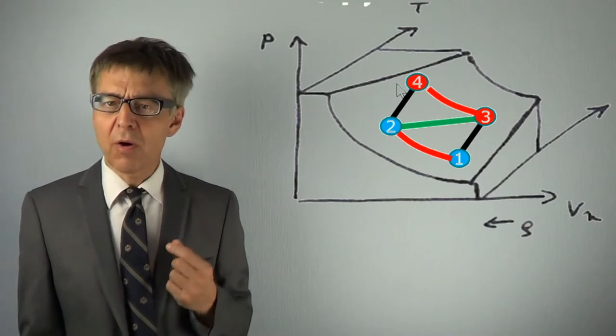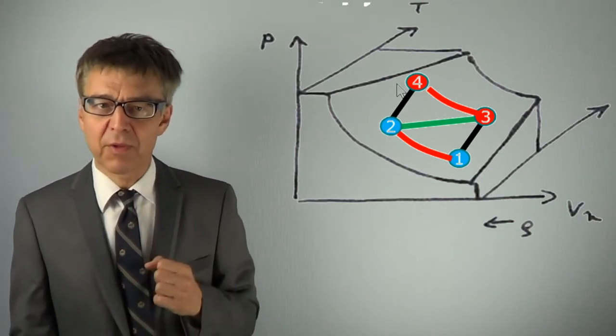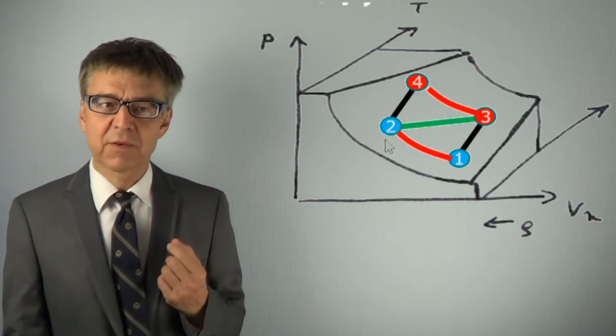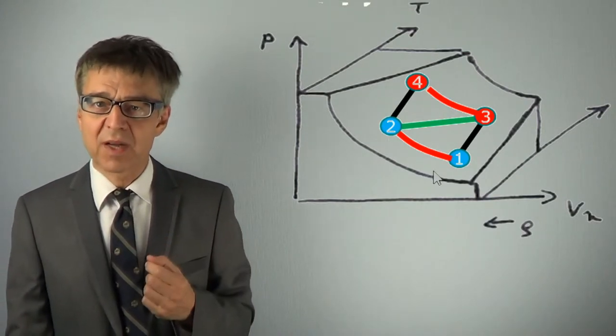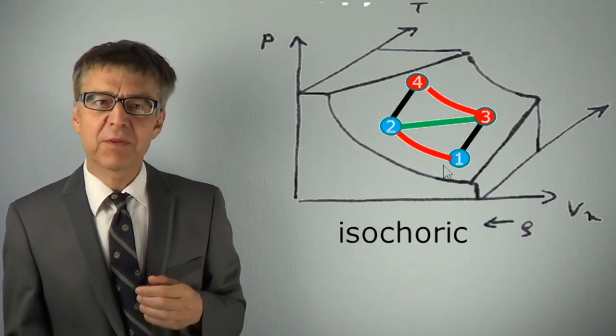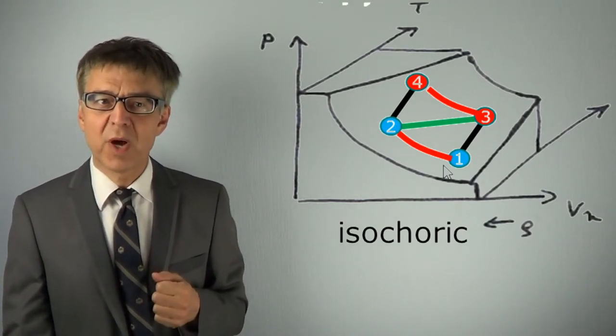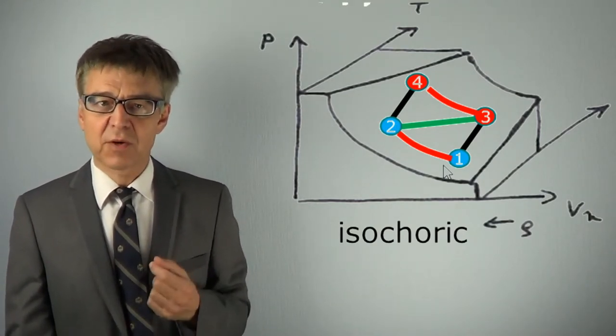We call all paths of constant temperature isotherms. We call paths of constant pressure isobars. We call paths of constant volume, such as between 2 and 4, isochors.